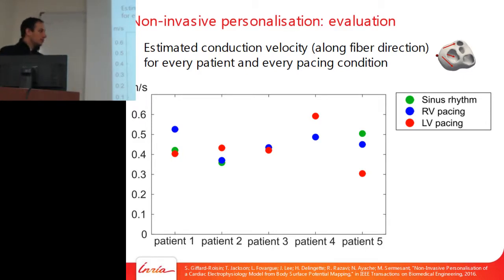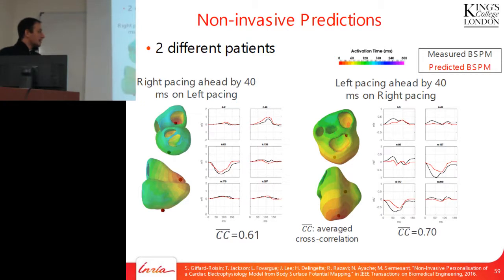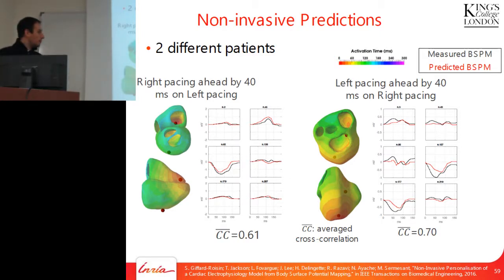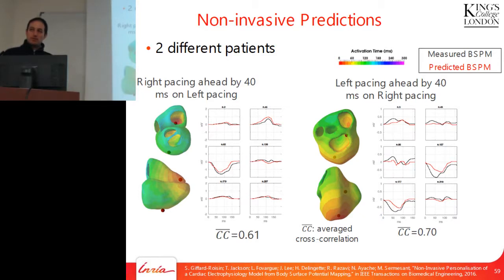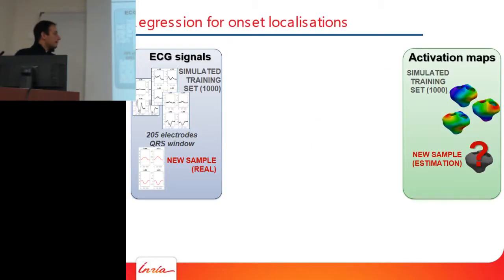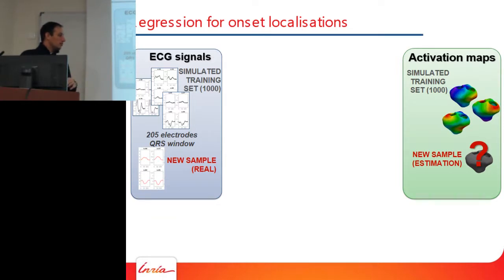Remaining limitations include: the current approach only handles one onset at a time, while the heart typically has several simultaneous onsets; predictions are deterministic without uncertainty estimation; and a patient-specific database must be generated for every patient. The goal is to have one large database where learning is done once, and when a patient comes in, you get a very quick answer without rerunning training.